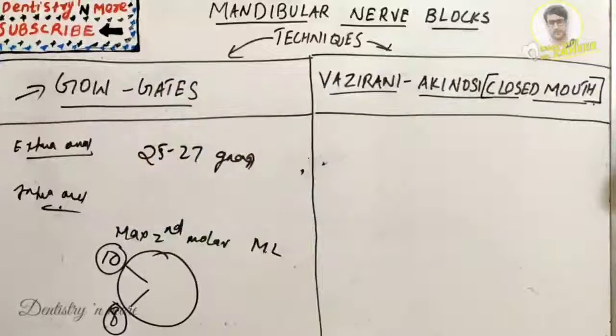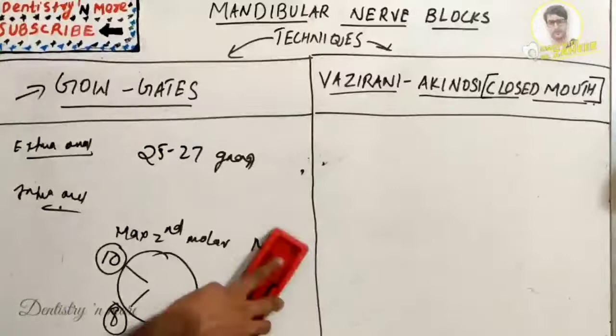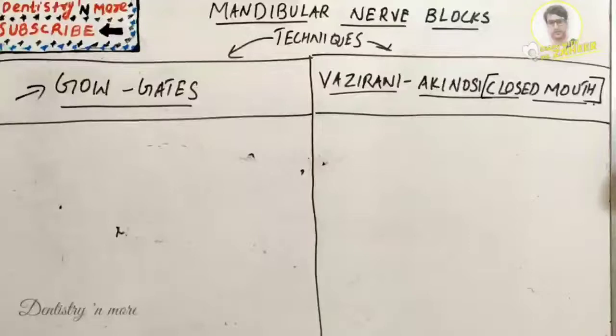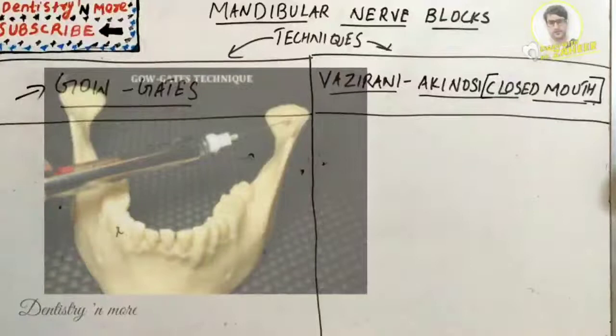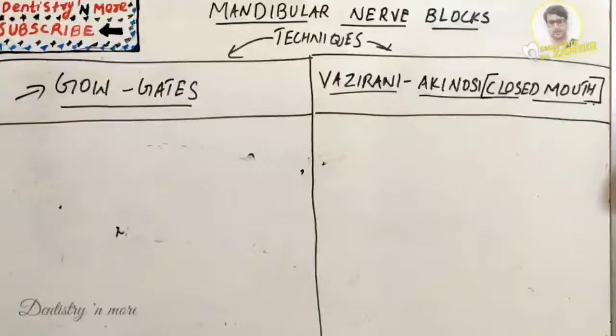After withdrawing the needle, wait 5 to 10 minutes before commencing the dental procedure. Subjective signs include tingling or numbness of the lower lip and tongue; objectively, no pain is felt during the dental procedure. Failures may be due to too little volume administered or anatomical difficulties. Complications include hematoma and trismus.